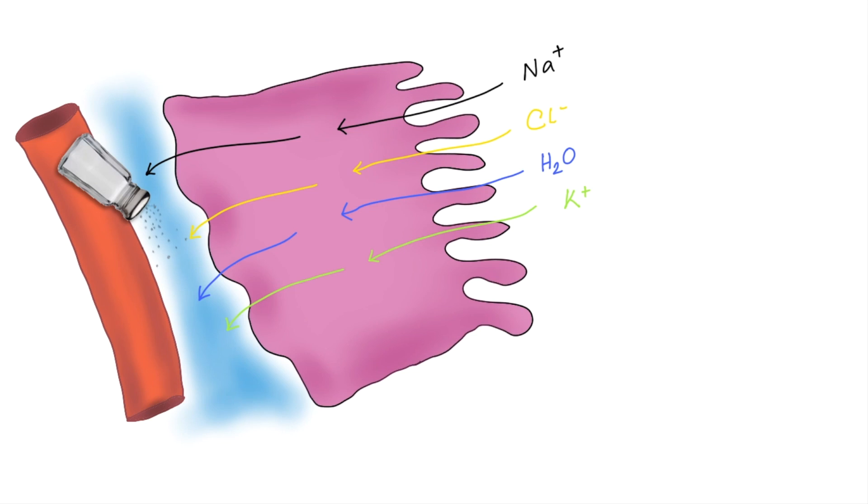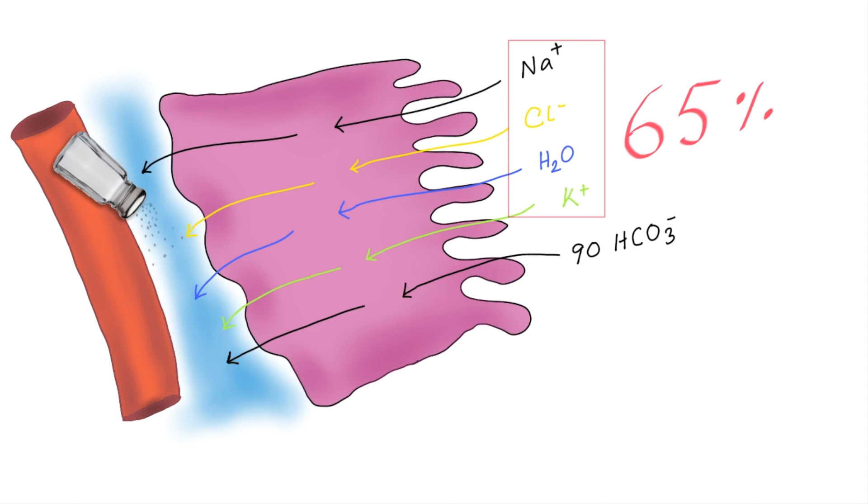65% of the potassium is reabsorbed as well as 90% of the bicarbonate ions, which are important in maintaining the pH of the blood. But glucose and amino acids are reabsorbed around 100% back into the blood to be used in processes such as respiration and making proteins.